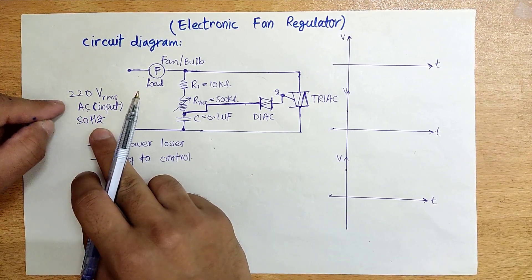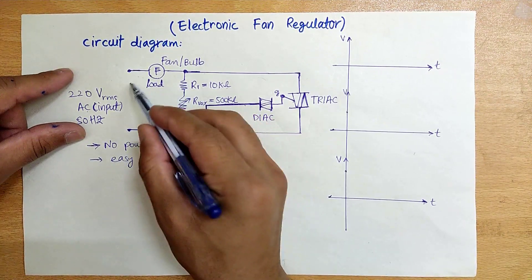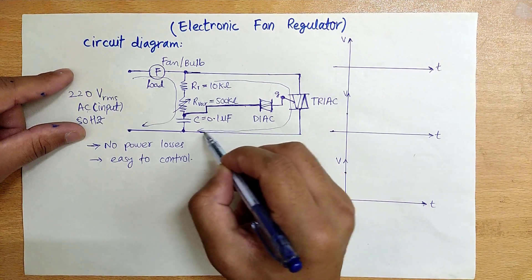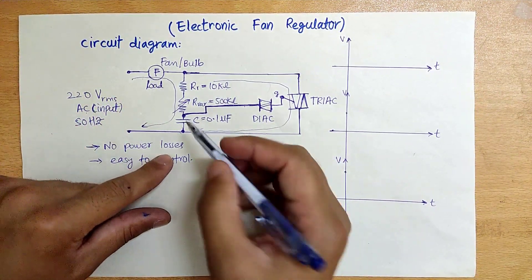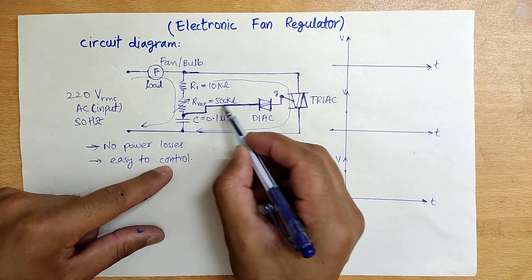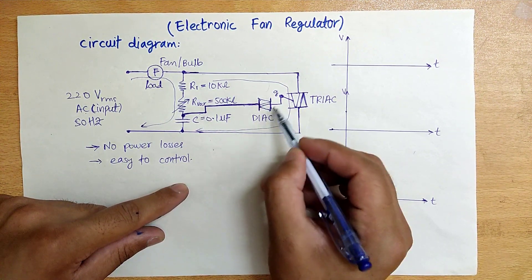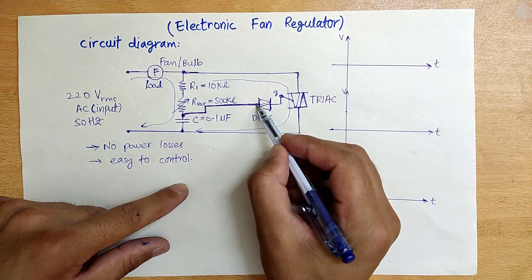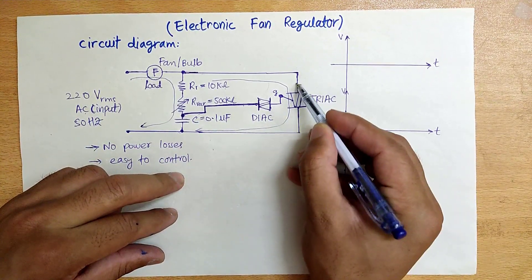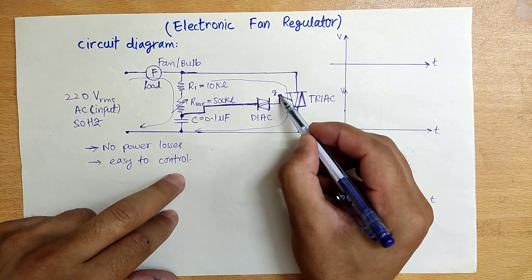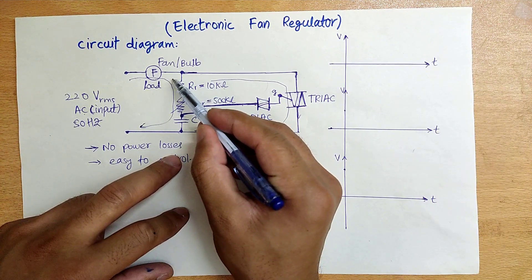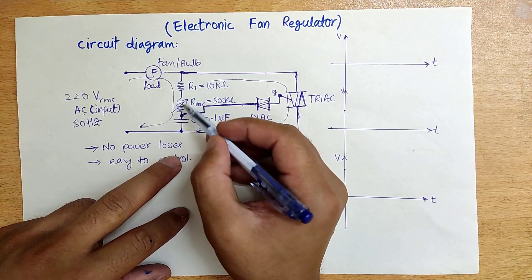The DIAC is connected from the capacitor node, and its output is connected to the TRIAC gate. How this circuit works: when the circuit is energized with 220 volts, two paths are available for current. Initially, the capacitor is at zero volts, so the voltage is less than the DIAC breakdown voltage, which means there is no gate signal for the TRIAC. No current flows through the TRIAC; current flows first through these resistors.